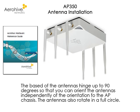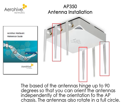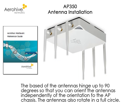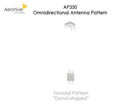used for 802.11 A and N, and one for the 2.4 GHz radio, used for 802.11 B, G and N. Please match the labels on the antennas to the labels on the APs. There are 2.4 and 5 GHz antennas on each side of the AP.